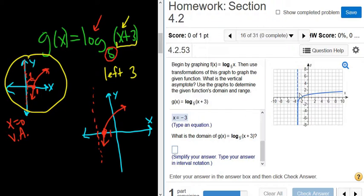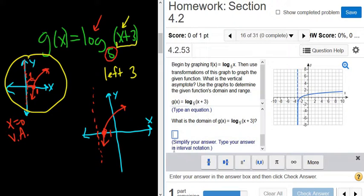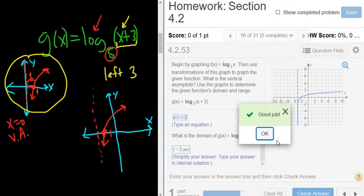What is the domain? So the domain is going to start at negative 3. So it's going to be negative 3 to infinity. It's all the x's. And we want to use a parentheses at the negative 3 because there's a dotted line. So it doesn't actually include the negative 3. Okay. So it should be negative 3 to infinity. Good job.